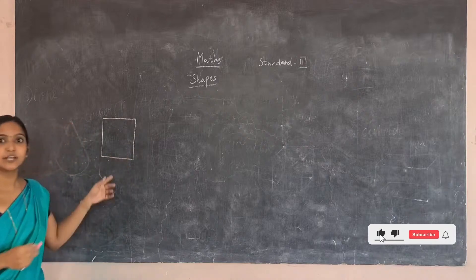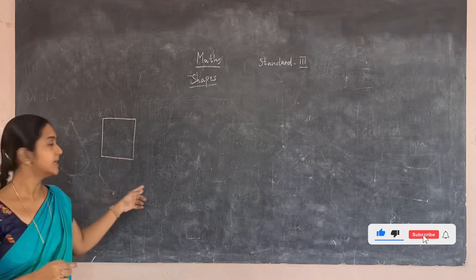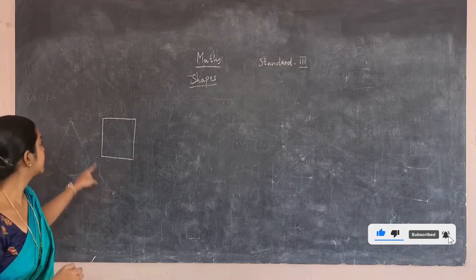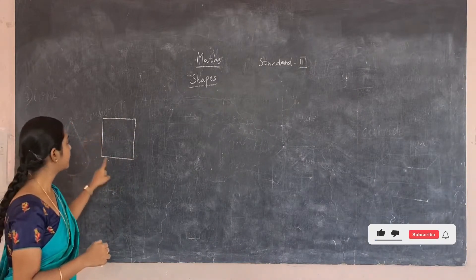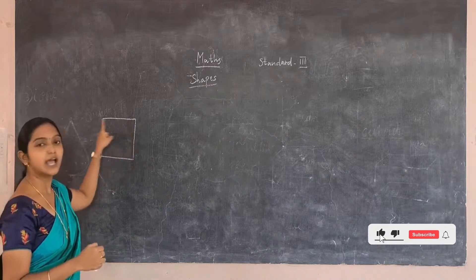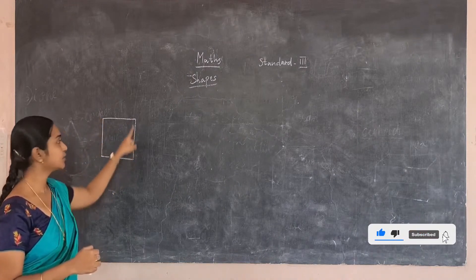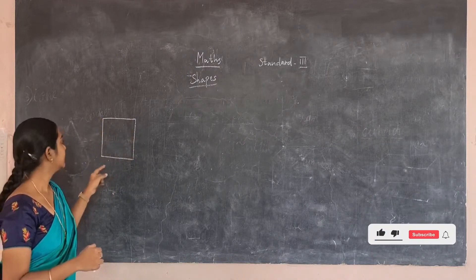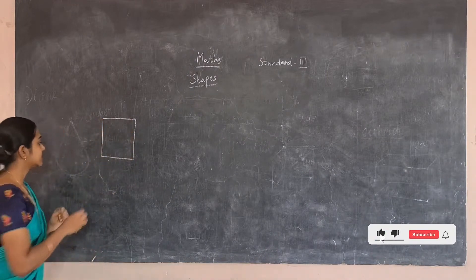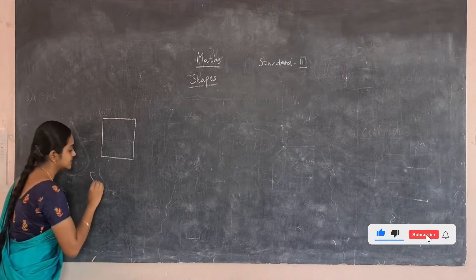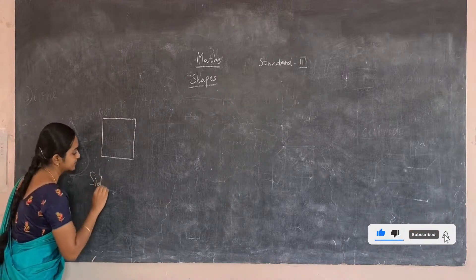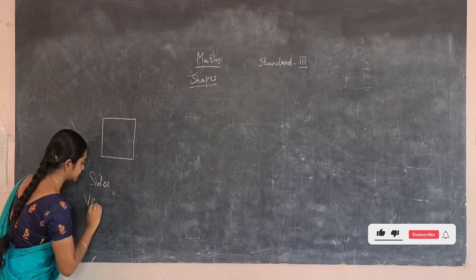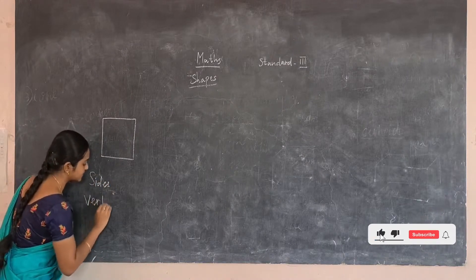What is this shape called as? It is called a square because it has 4 lines, and the 4 lines are equal, so we call it a square. Now let us find the sides and vertices of the square.